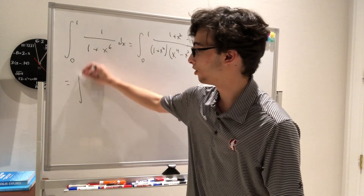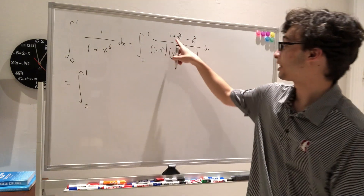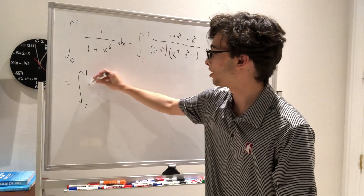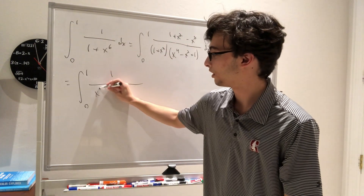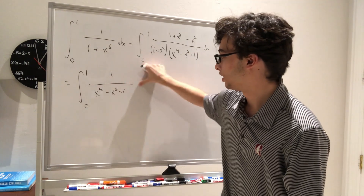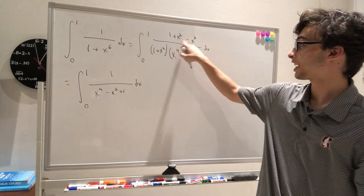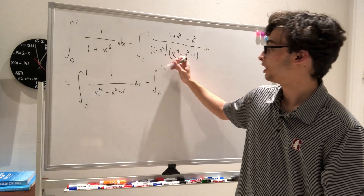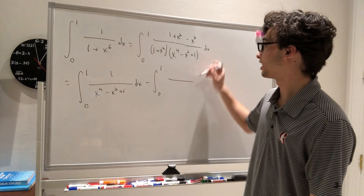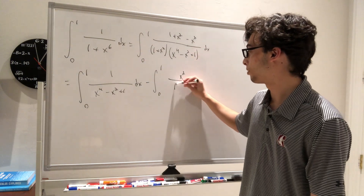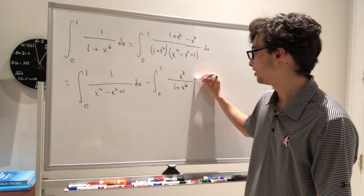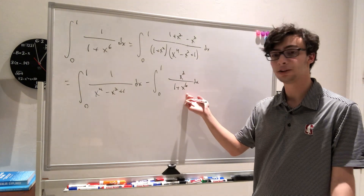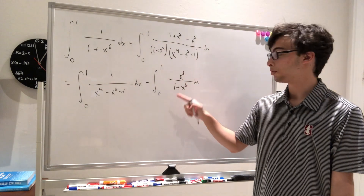So we can split this up. This equals the integral from 0 to 1: taking the first part, the 1 plus x squared cancels, leaving us with 1 over (x to the 4th minus x squared plus 1) dx. Then we're going to have the second half, which is a minus integral from 0 to 1, rewriting the denominator and keeping the x squared up top, over 1 plus x to the 6th dx. This second part is really easy to integrate — you can do a u-sub with u equals x cubed, and this would become du on the numerator.